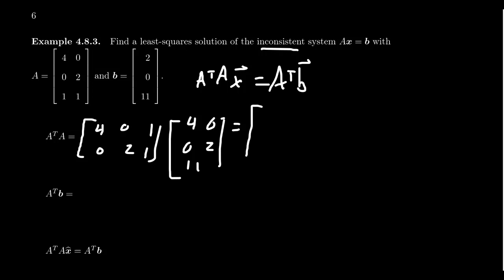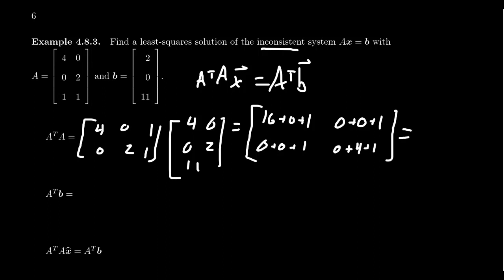And so when you do that calculation, you get 4 times 4, which is 16, plus 0, plus 1. For the next bit, you're going to get 0 plus 0 plus 1. You'll get again 0 plus 0 plus 1. And then finally, you end up with 0 plus 4 plus 1. And so A transpose A simplifies to be the matrix 17, 1, 1, and 5.